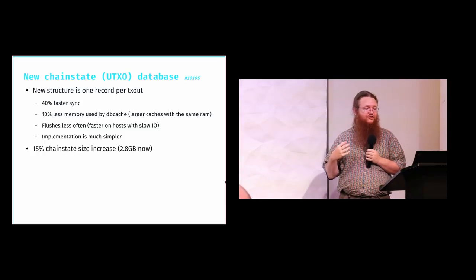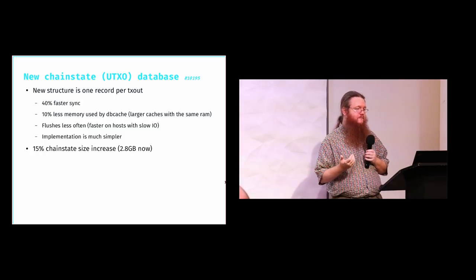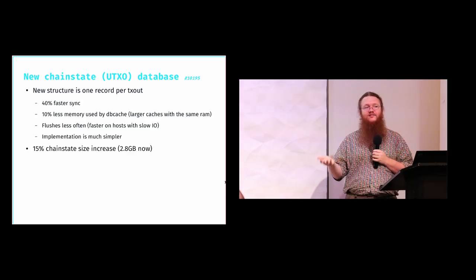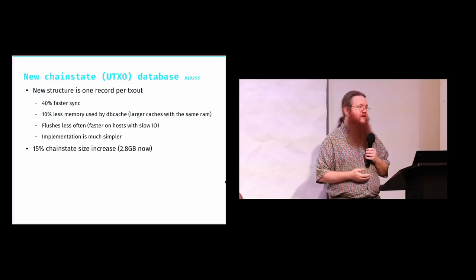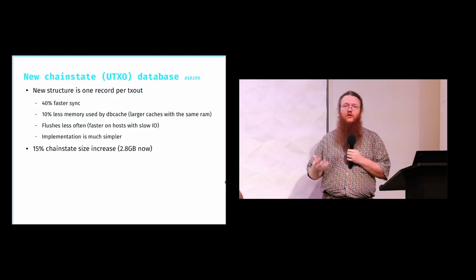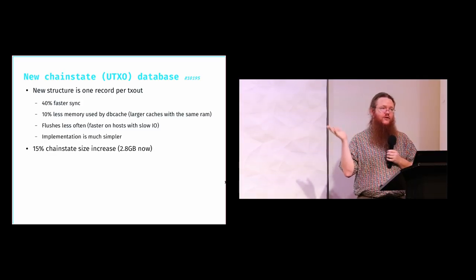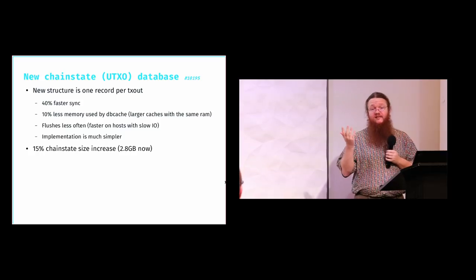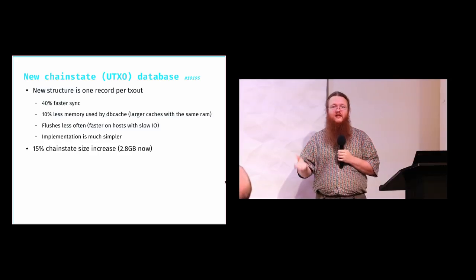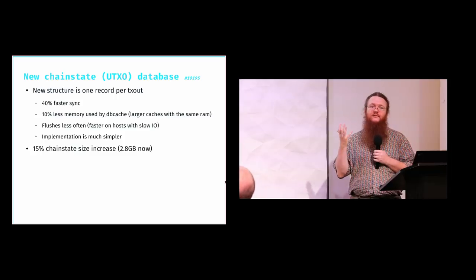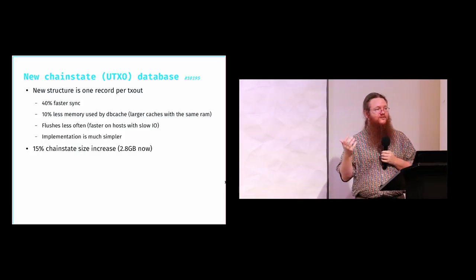The downside is the database is larger on disk — a 15% increase in the chain state directory, so about 2.8 gigabytes, which isn't really a big deal. In the old format you have add-modify-modify operations; the new format is maybe what people thought it was doing all along. Other alternative implementations — BTCD, BCAT, and others — had copied the same batched structure from Bitcoin Core, so they all also work like the old model.